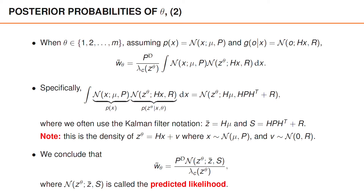For theta greater than 0, the unnormalized weight is therefore pd times the predicted likelihood, divided by lambda c of z-data. We have already discussed pd and lambda c, so the last thing to make sense of is the predicted likelihood, which is a Gaussian density with mean z-bar and covariance matrix S, evaluated at z-data. What this says is that the hypothesis obtains a small weight unless the measurement z-data is close to where we would expect to find the object measurement, where S determines what we mean by close. If S tells us that we are very uncertain about where the measurement may be, the unnormalized weight is less sensitive to the value of z-data.